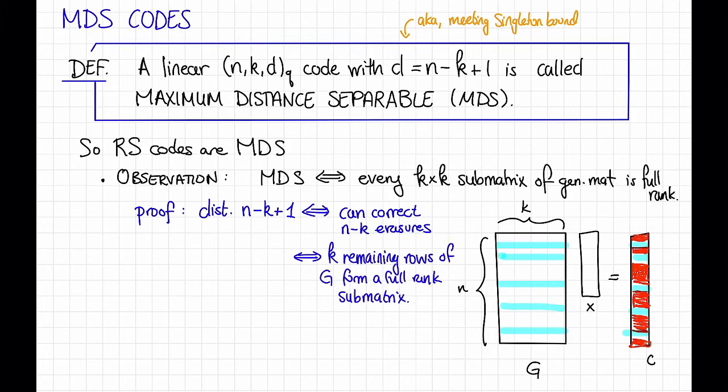So that's a nice useful property of MDS codes. Notice that Reed-Solomon codes have Vandermonde matrices as generators. And we already saw that this property was true for Vandermonde matrices. So that checks out.